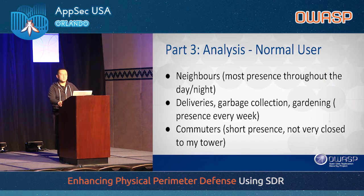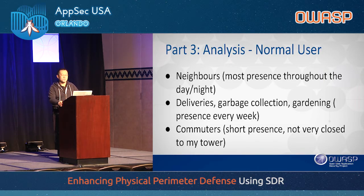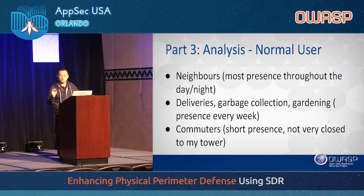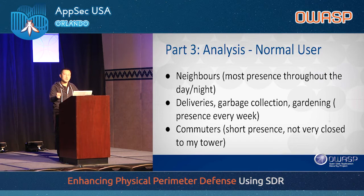Next, let's perform some traffic analysis to identify what you'll generally pick up. The first group is your neighbors, who generally always be present throughout the day or night, with medium signal strength. The second group of signals will be those that only show up at certain times of day or certain days of the week — such as deliveries like FedEx or UPS guys, who only deliver in the morning or afternoon, and garbage collection or gardening, which show a short presence near your perimeter. Sometimes you also pick up commuter signals, which have a very short presence — the signal only lasts maybe five to ten minutes — and are generally further away from your perimeter.